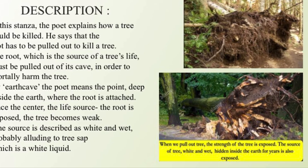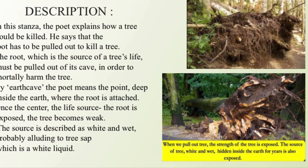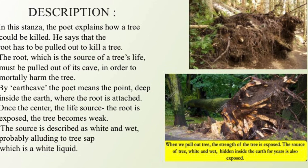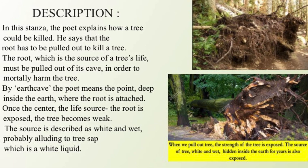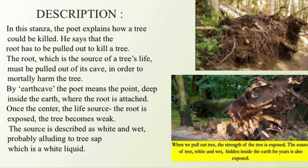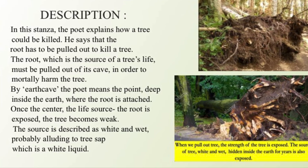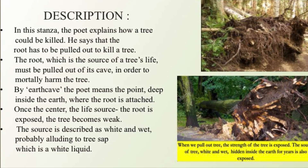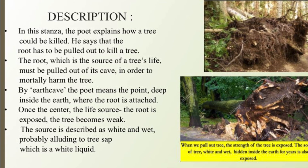Here the poet explains how a tree should be killed. He says the root has to be pulled out — the root, which is the source of the tree's life, must be pulled out of its cave in order to fatally harm the tree. By earth cave, the poet means the point deep inside the earth where the root is attached. Once the life source — the root — is exposed, the tree becomes weak. The source is described as white and wet, probably alluding to tree sap, which is a white liquid.